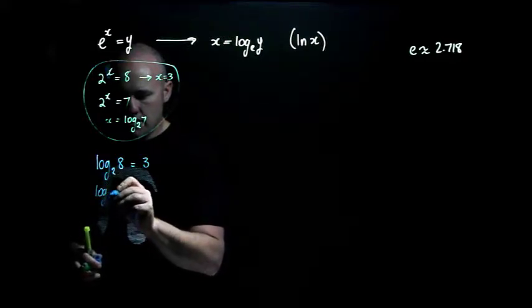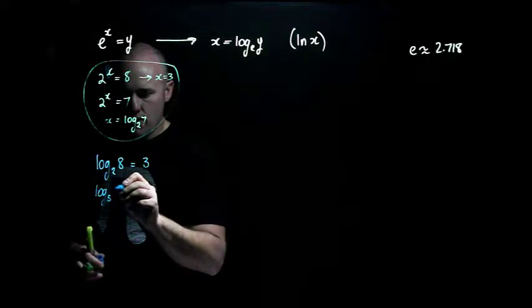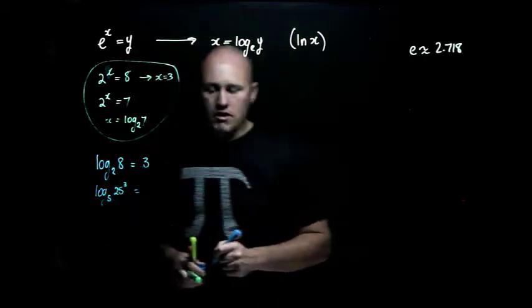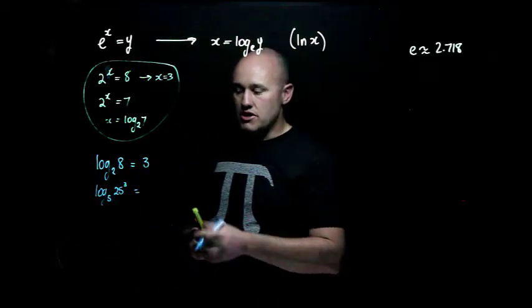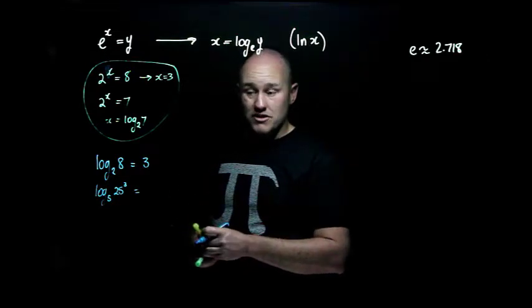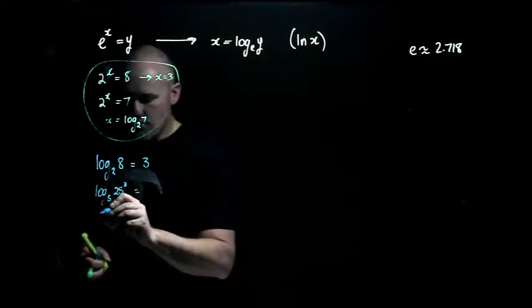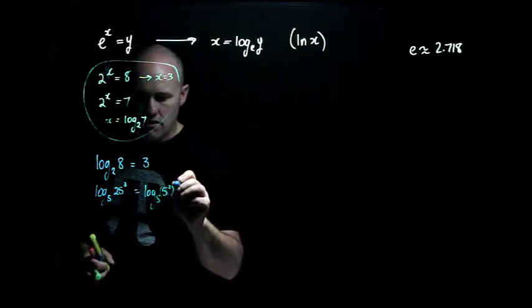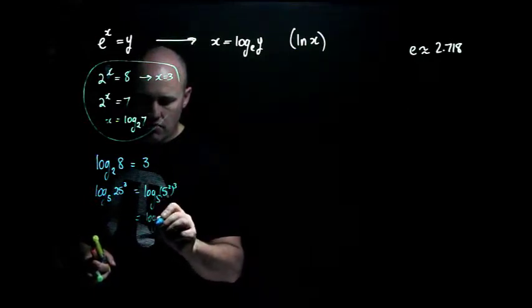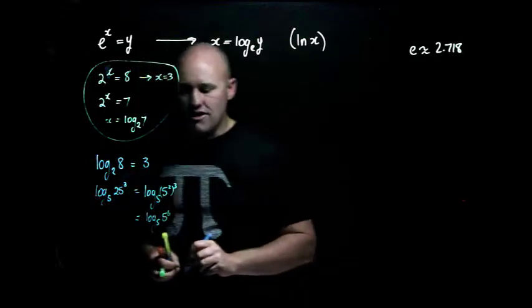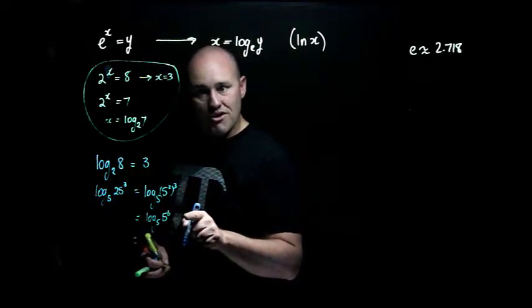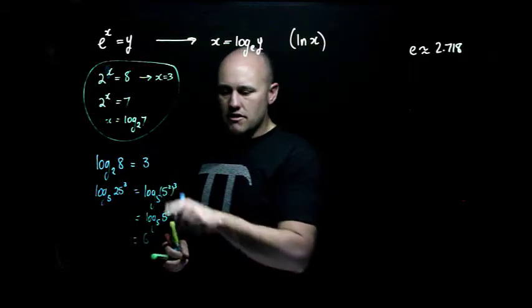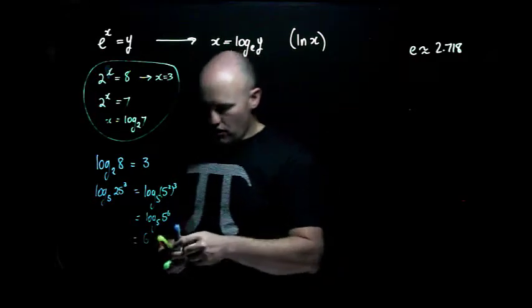Let's say we had log base 5 of 25 cubed equals something. Okay, we want to evaluate that. And this is a different situation. You can actually use the log laws, three or four ways you could probably do this. But for you it might just be a case of recognizing that's equal to log base 5 of 5 squared cubed, which is just equal to log base 5 of 5 to the power of 6. And then you're asking yourself the question, 5 to the power of what equals 5 to the power of 6? I think the answer would be 6. So that's how this log simplification can work. But let's talk about the log laws, okay?